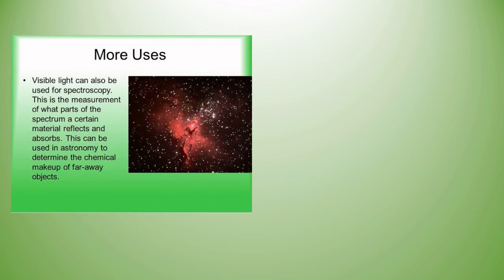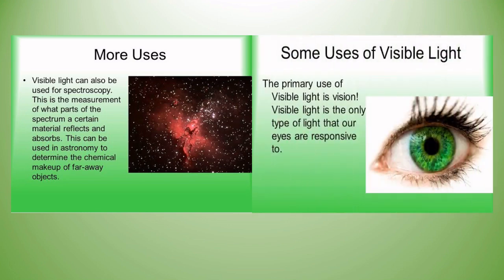Uses of visible light: it can be used for spectroscopy — the measurement of what parts of the spectrum certain materials reflect and absorb — which can be used in astronomy to determine the chemical makeup of objects. The primary use of visible light is vision. Visible light is the only type of light that our eyes are responsive to.